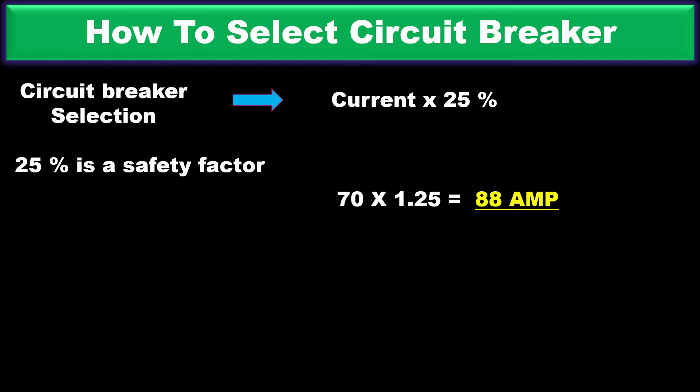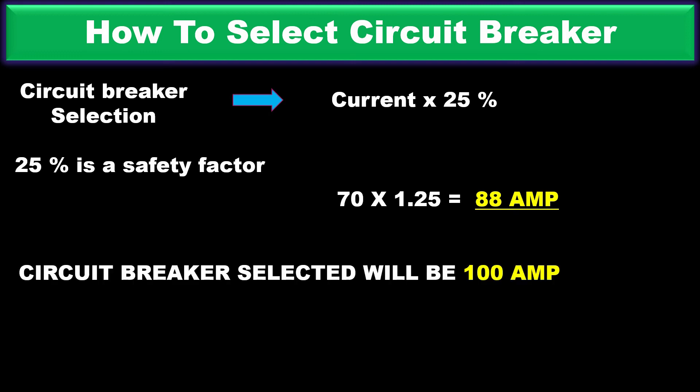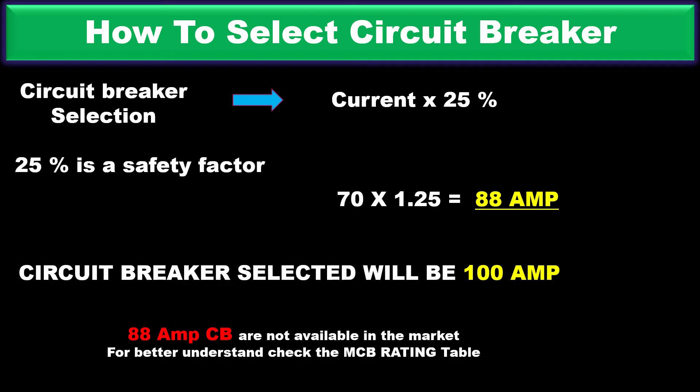Now we select the circuit breaker. The formula is: current multiplied by 1.25, where 25% is a safety factor — we add 25% extra current for safety. So 70 amperes multiplied by 1.25 gives 88 ampere. For this load we need an 88 ampere circuit breaker.